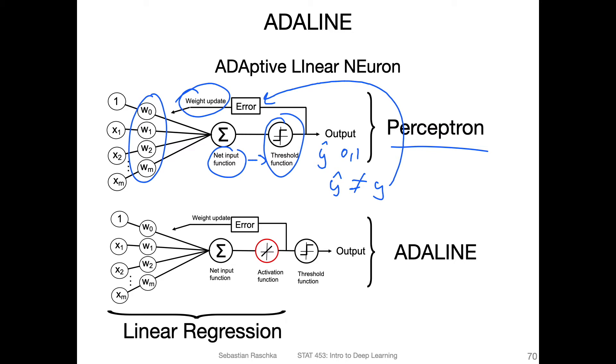At the bottom is the ADALINE. You can think of this part here as the base model. This is how linear regression works. Again, we also compute the net input similar to the perceptron.